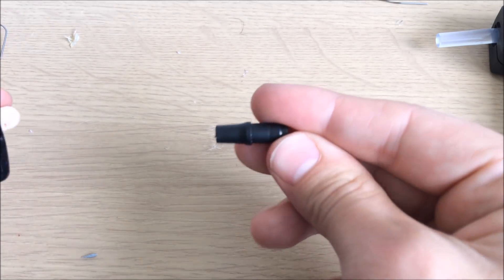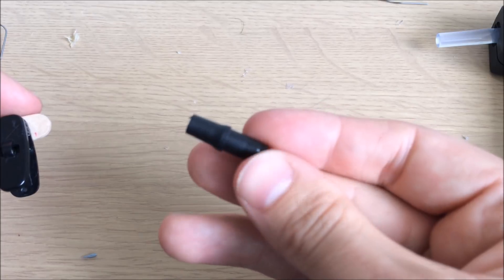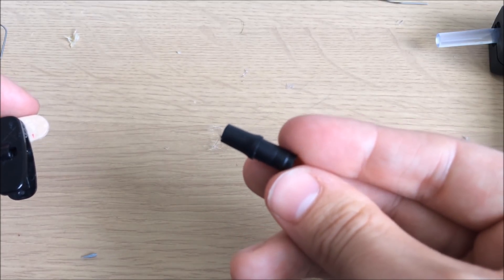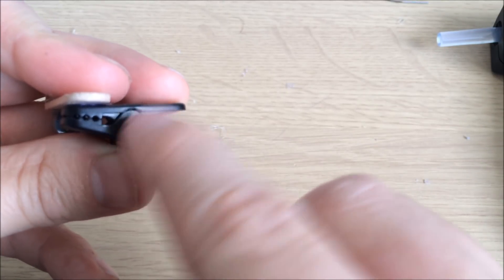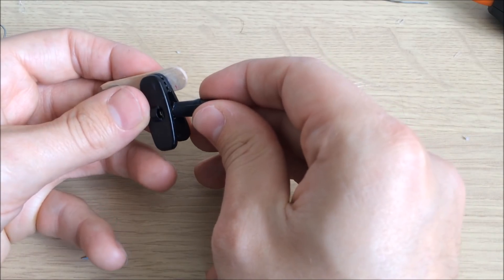Next, you need to find something that you can use as a spool for the string. This outer section from the end of the pen should work great, and it's also big enough to fit into place on the edge of the clip like this.